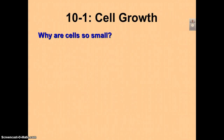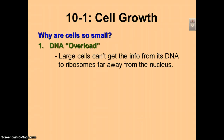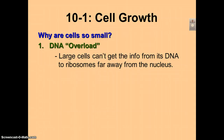Why are cells so small? They're small for two reasons. Number one is DNA overload, which some textbooks call an information crisis. If a cell is too big, the ribosomes are too far away from the nucleus, and the mRNA that was made during transcription will not be able to travel through the cytoplasm.